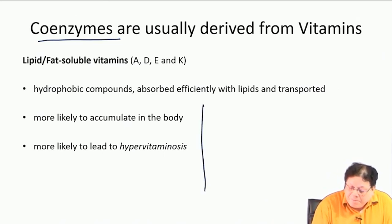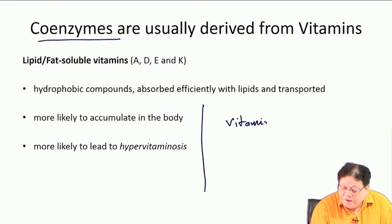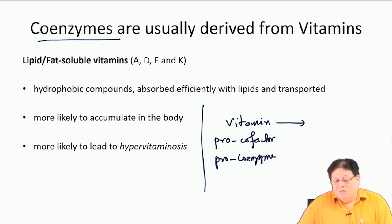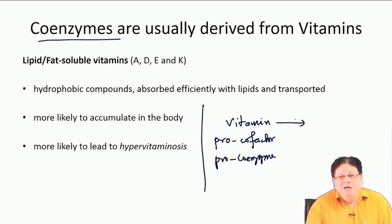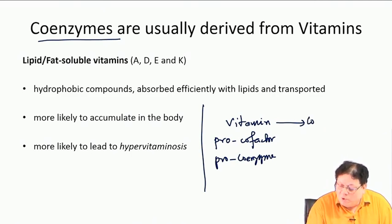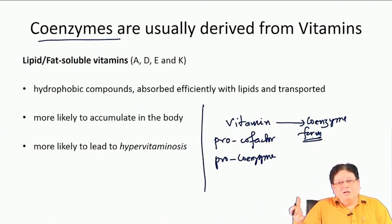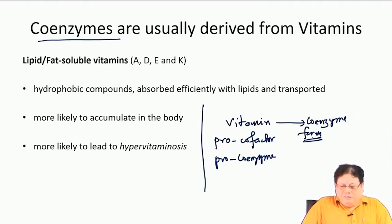So vitamins are pro-coenzymes. In the body they are converted into another form — the active coenzyme — which takes part in the reaction and helps the enzyme to catalyze the reaction. Vitamins are classified into two groups: lipid-soluble vitamins, which are soluble in organic solvents, and water-soluble vitamins.